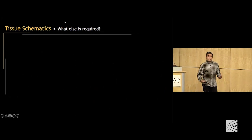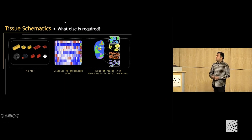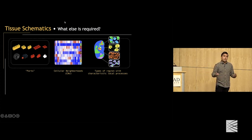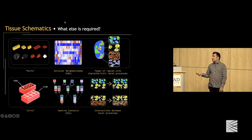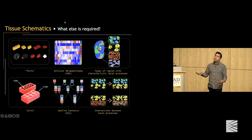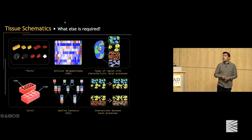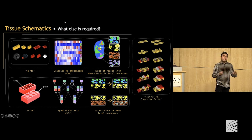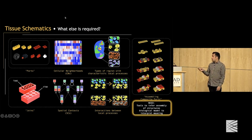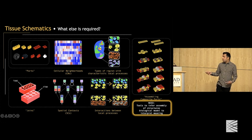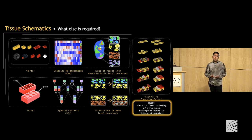We want to build schematics of tissues. We have the parts — neighborhoods with local processes ongoing — and we have how these parts join together via spatial contexts with these interactions. What's missing is how these parts are assembled into more complicated structures. We need computational tools to infer the assembly of these structures and a biological model to ascribe meaning to them.